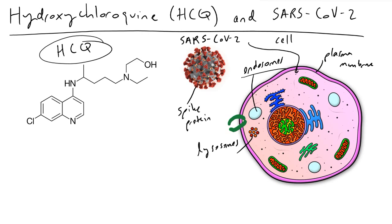Finally, we know from the literature that HCQ has an ability to prevent the terminal glycosylation of the ACE2 receptor — which I have here as this green thing. By preventing this terminal glycosylation on the ACE2 receptor, the spike proteins that need to bind onto the ACE2 receptor in order for a new coronavirus infection to occur are inhibited. Having HCQ present prevents this terminal glycosylation, which interrupts this process and is another way of preventing additional viral infections by the coronavirus.